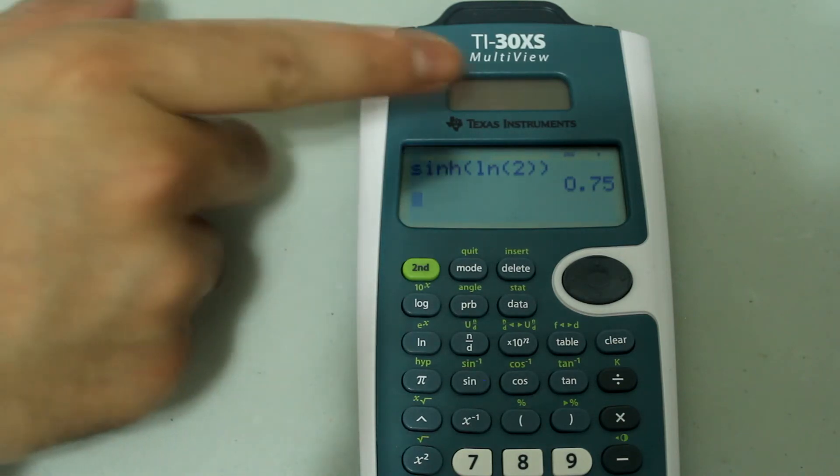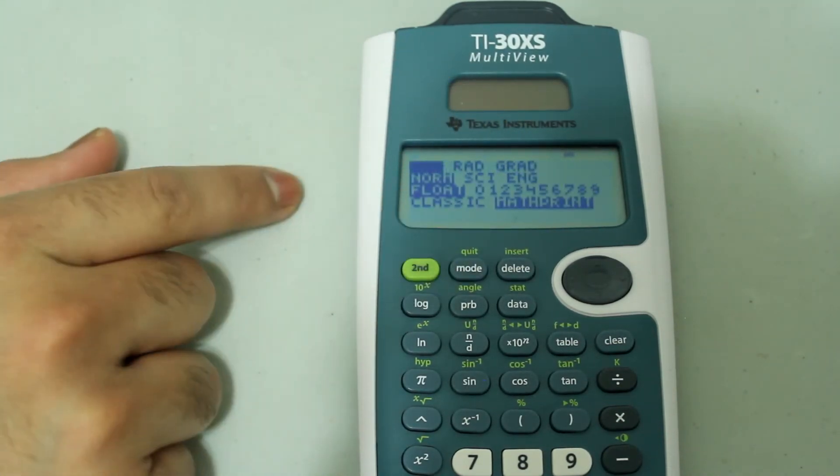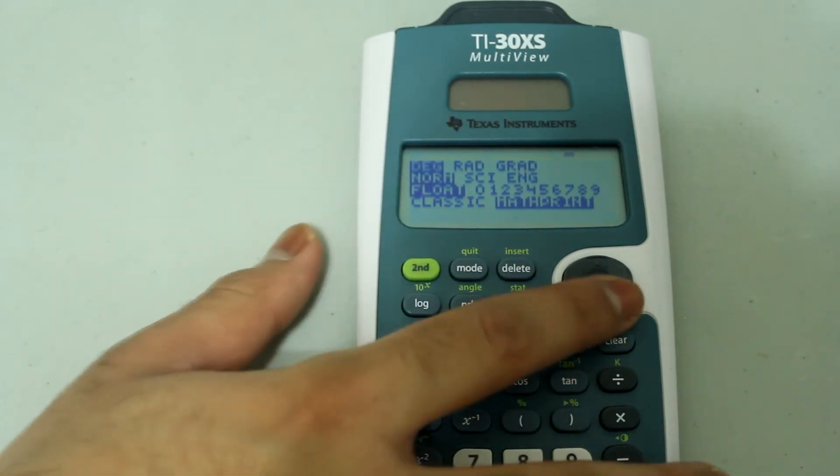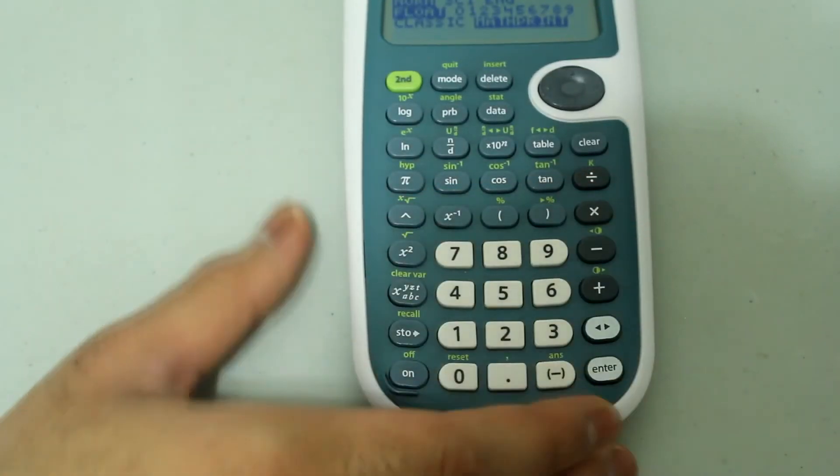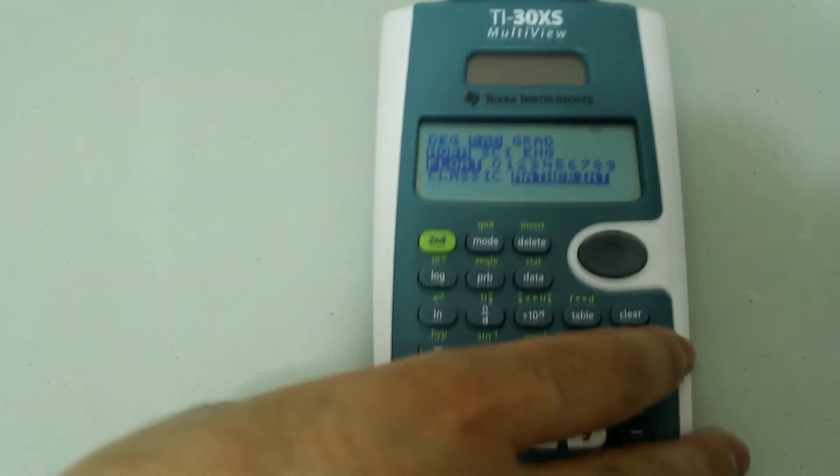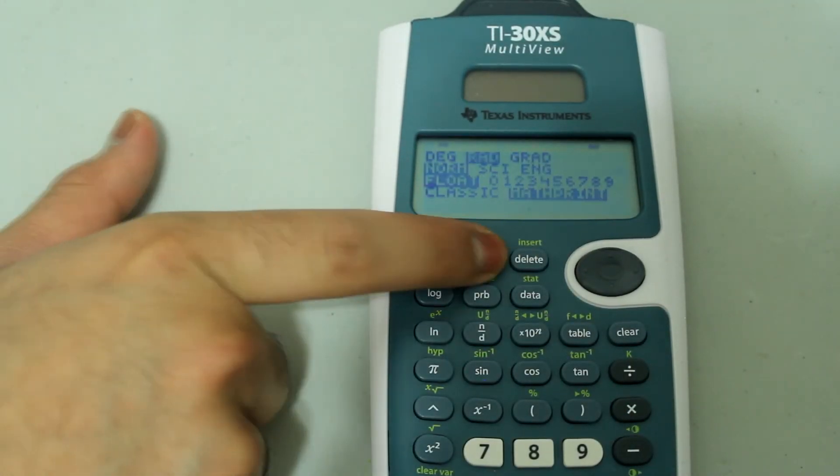For example, I was in degrees but if I go and change that to radians, I'm going to arrow over to radian and then press ENTER. So now I'm in radian mode. Second mode to quit.